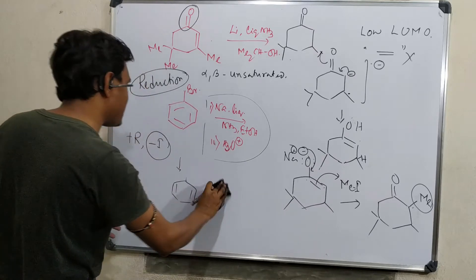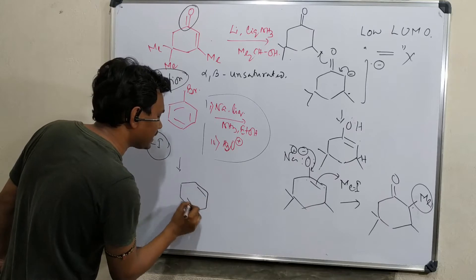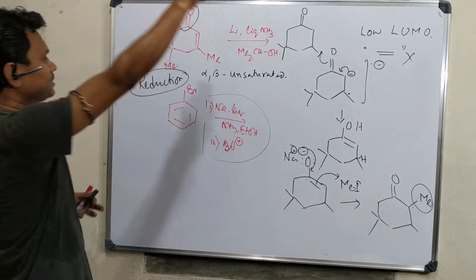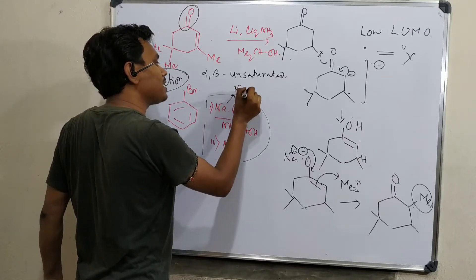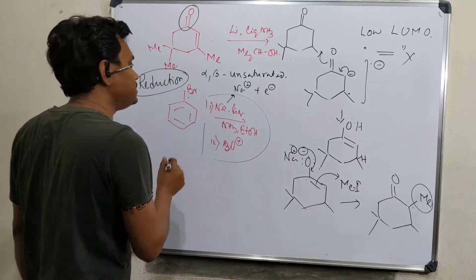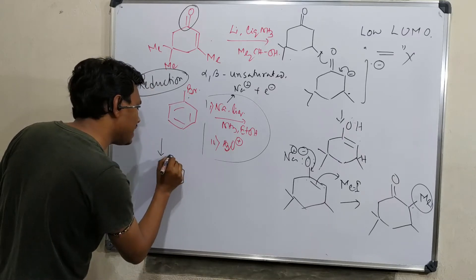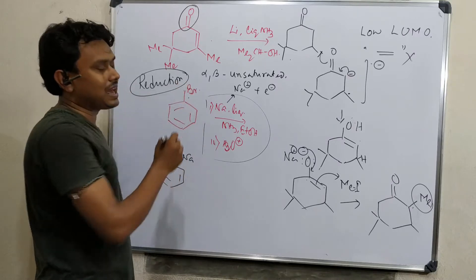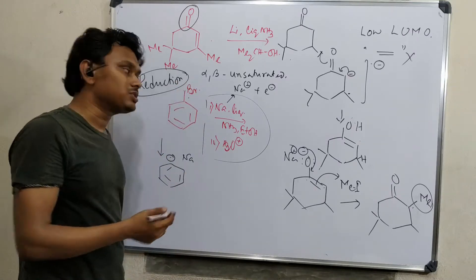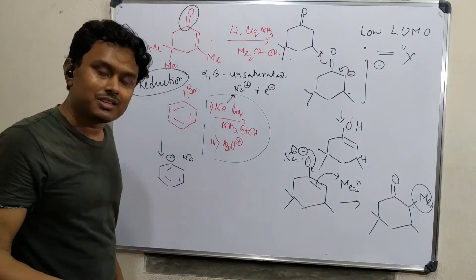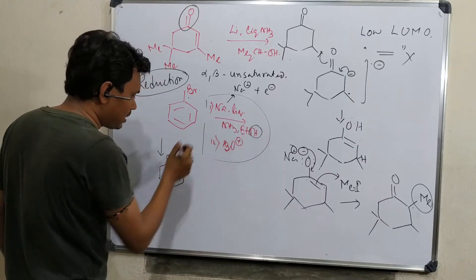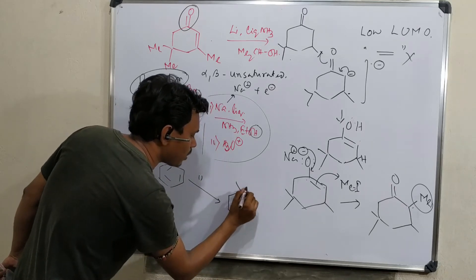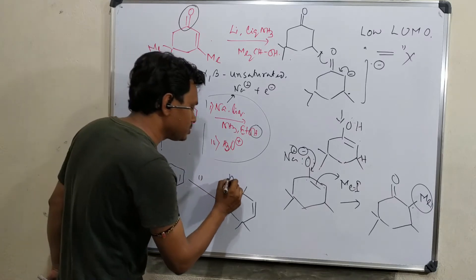During the reaction conditions, sodium produces sodium plus and electron, and that electron reduces the C-Br bond into a carbanion — phenyl minus and sodium — similar to how aryl halides react with lithium to produce aryllithium, or with magnesium to produce phenyl magnesium bromide (Grignard reagent). After that, it abstracts a proton and produces benzene. This benzene then undergoes Birch reduction under similar conditions to produce the 1,4-reduced product.